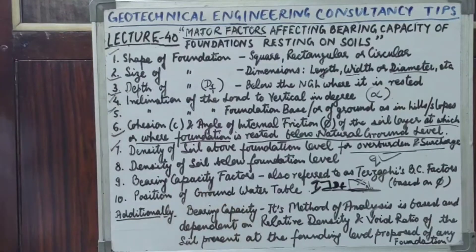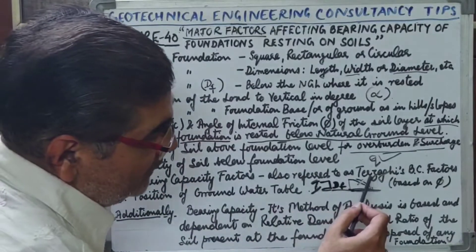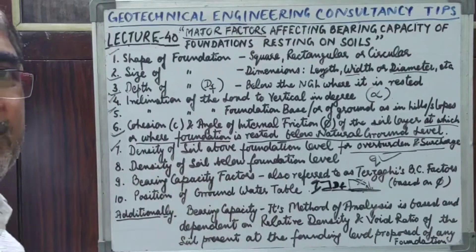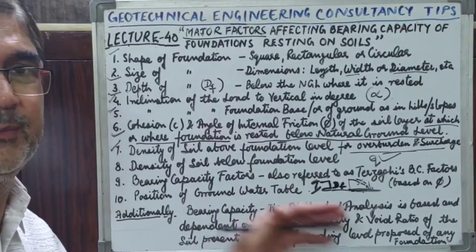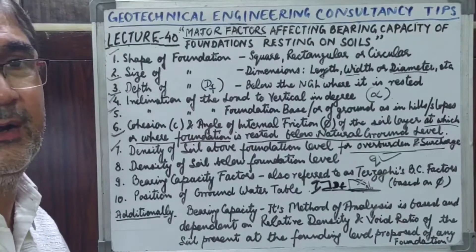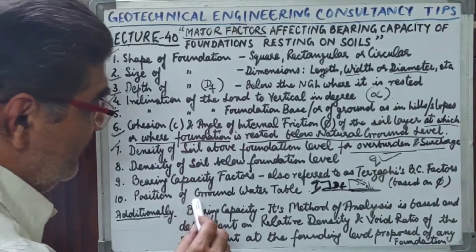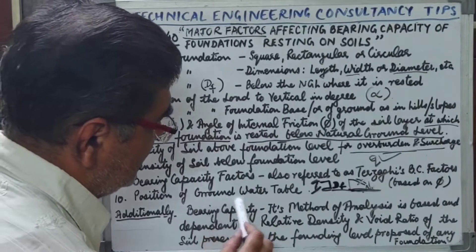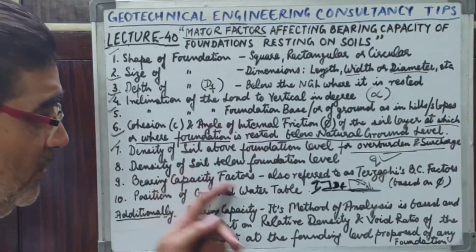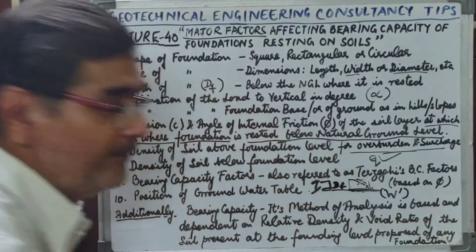The position of the ground water table — where it is relative to the natural ground level — is also a key factor. It may be between the natural ground level and the proposed founding level, at the proposed founding level, or at a certain depth below the founding level. I will discuss this separately in a dedicated lecture on the ground water table, including how the water table correction factor W' is considered in calculations.